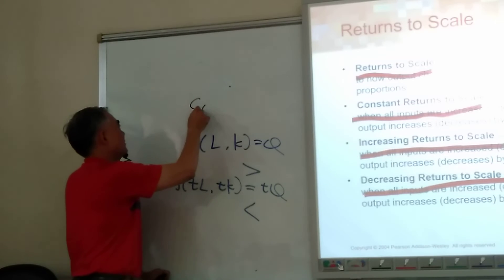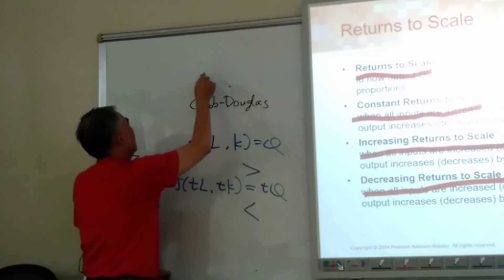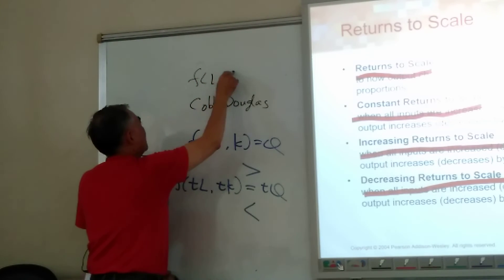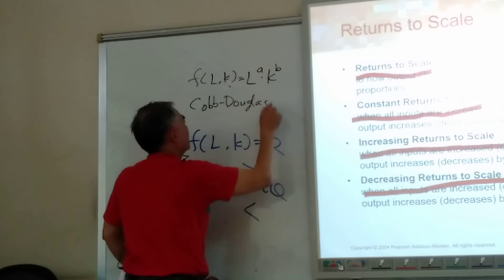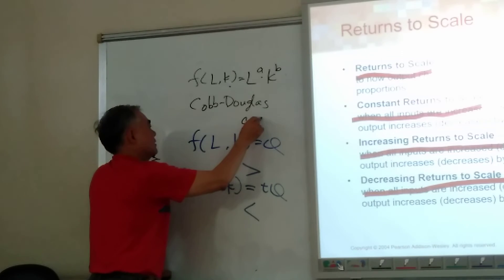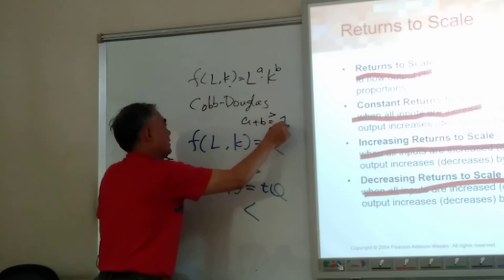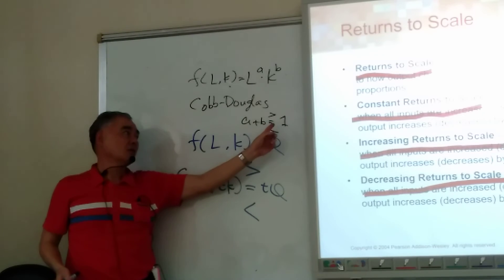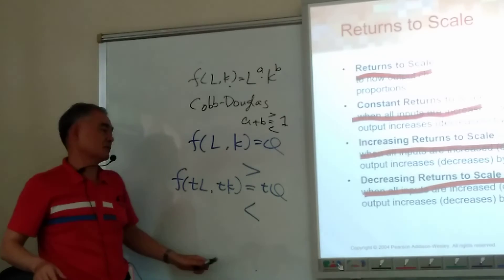That's one reason why many books talk about the Cobb-Douglas production function: F(L, K) = L^A × K^B. If A plus B is greater than 1, it's increasing returns to scale. If A plus B equals 1, it's constant returns to scale. If A plus B is less than 1, it's decreasing returns to scale.